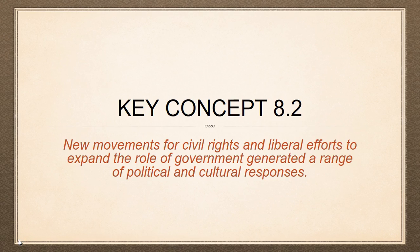we're talking mostly about the Civil Rights Movement — capital C, capital R, capital M — which we're going to place primarily in the 1950s and 1960s, although it could extend all the way back to the beginnings of slavery in this country in the early 17th century and right on through till today. We're going to look at it from a historical perspective, focusing on the 1950s and 60s, touching on the 1970s. We'll also look at various other reform movements happening around the same time.